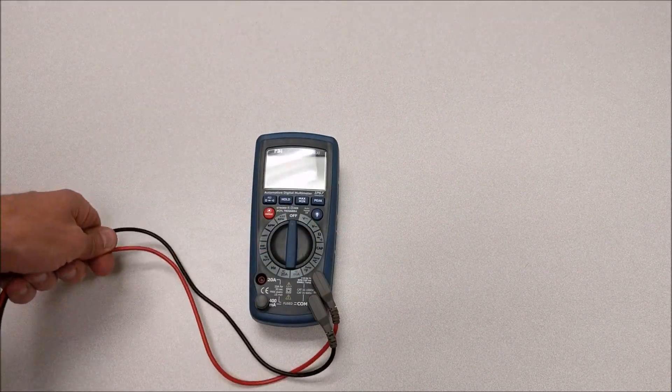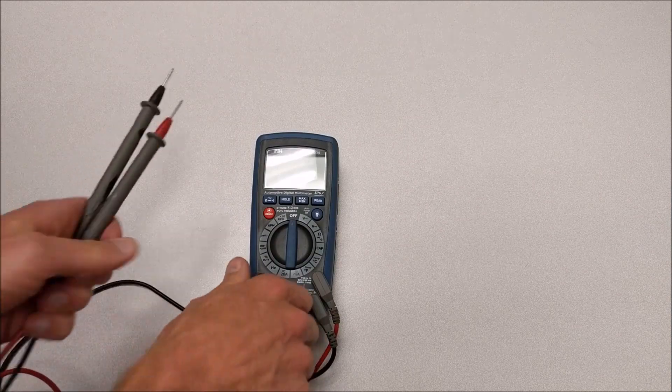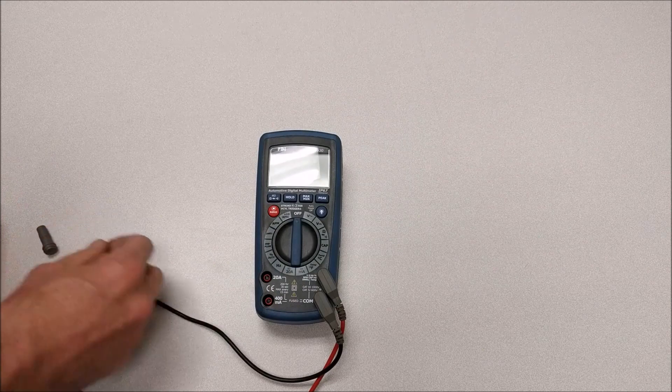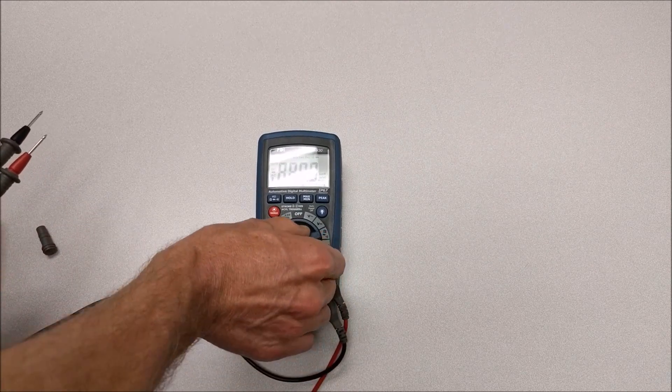Now I also have another meter here, just to show you another example. This would be the same thing. So this one is fused at 20 amps and at 400 milliamps, so I would turn this to the ohm setting.